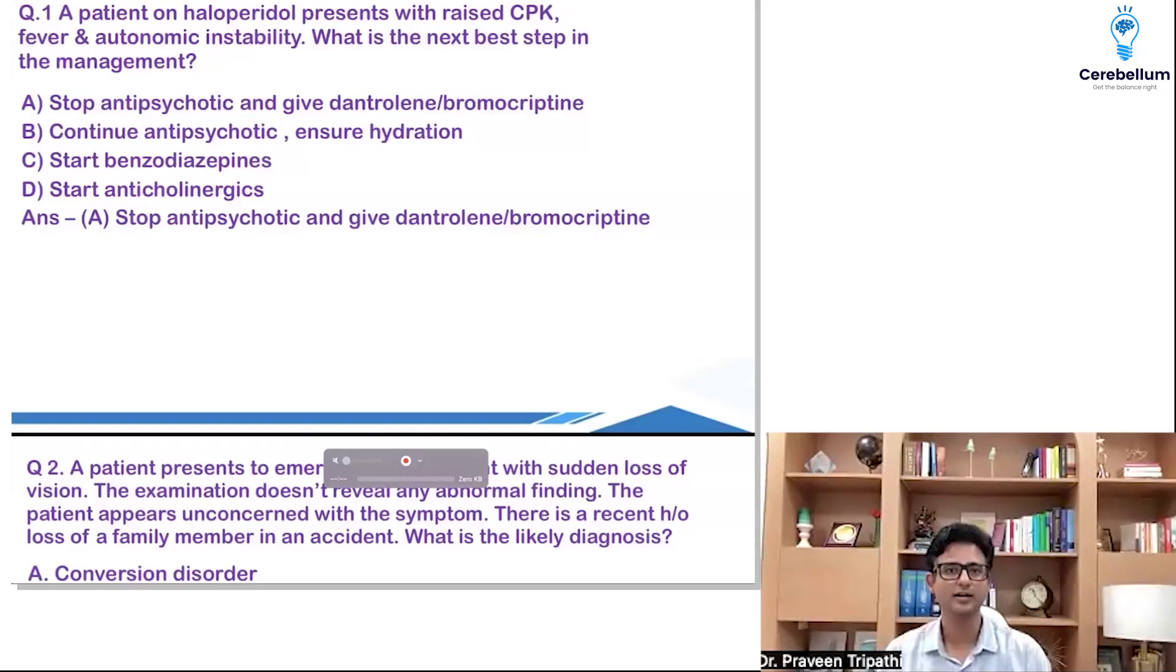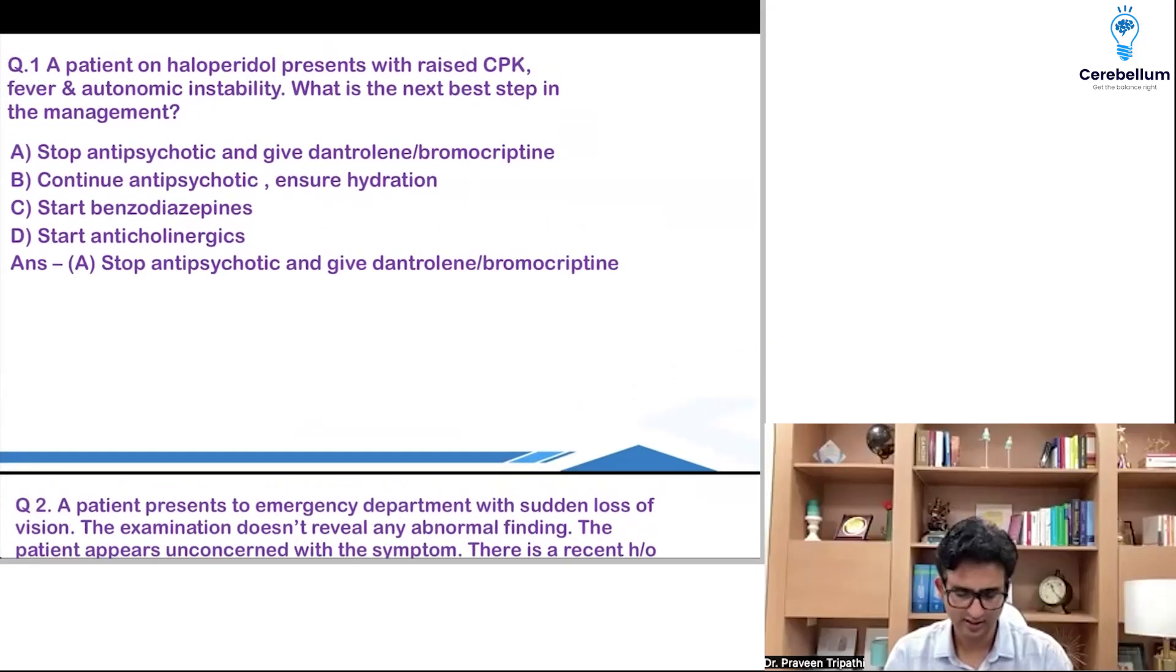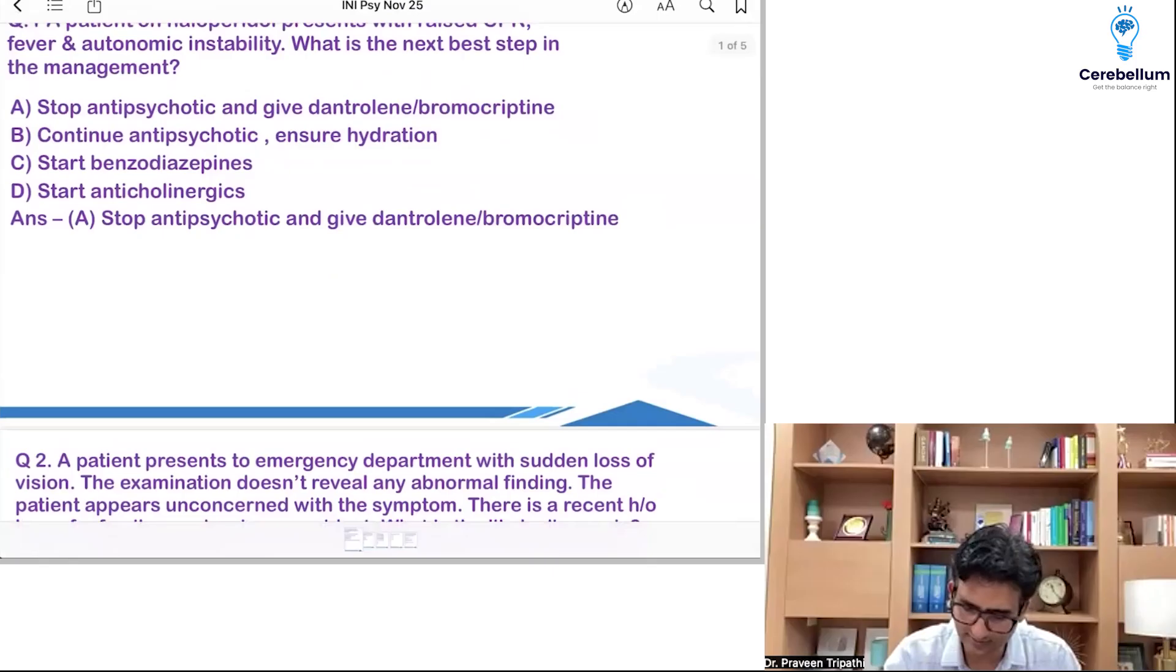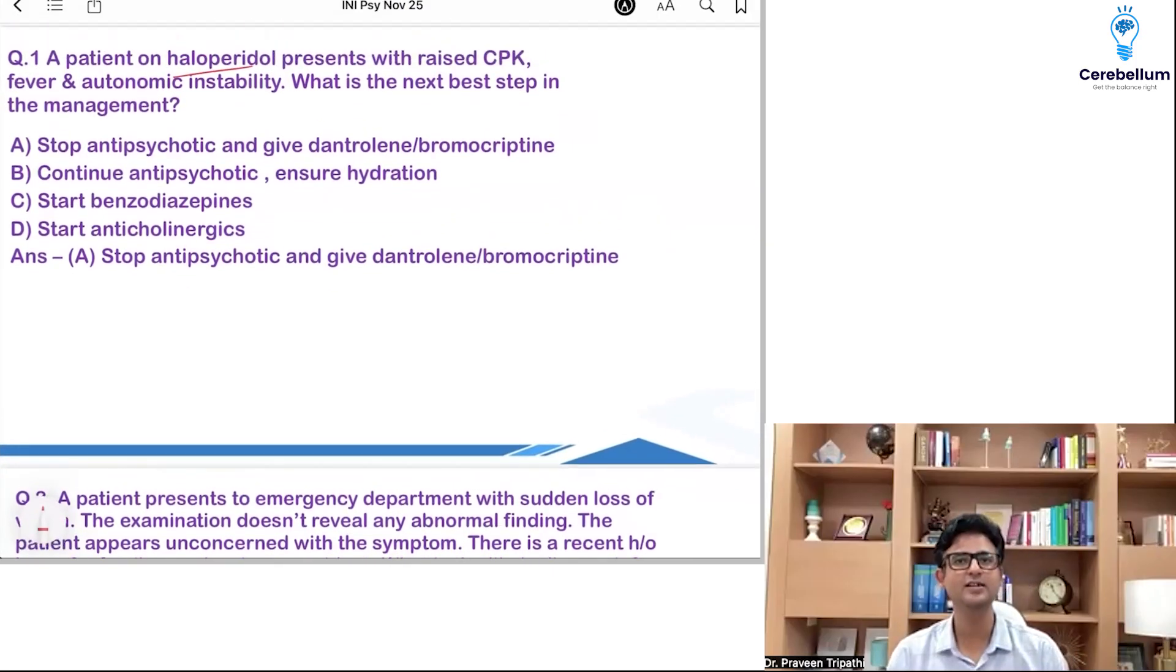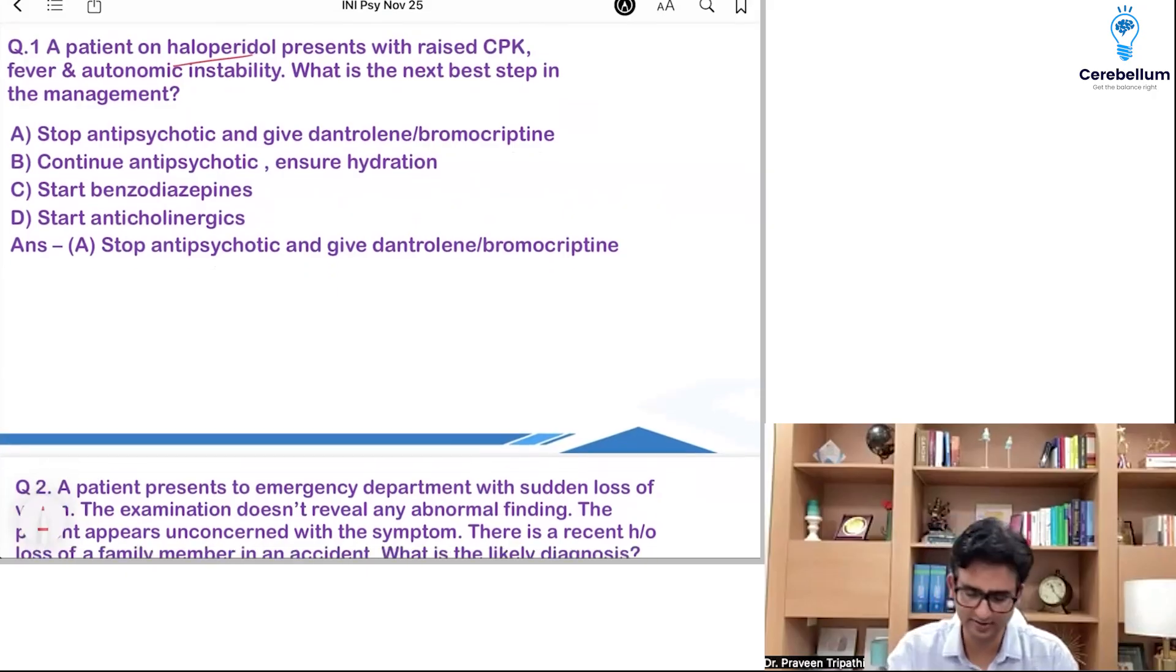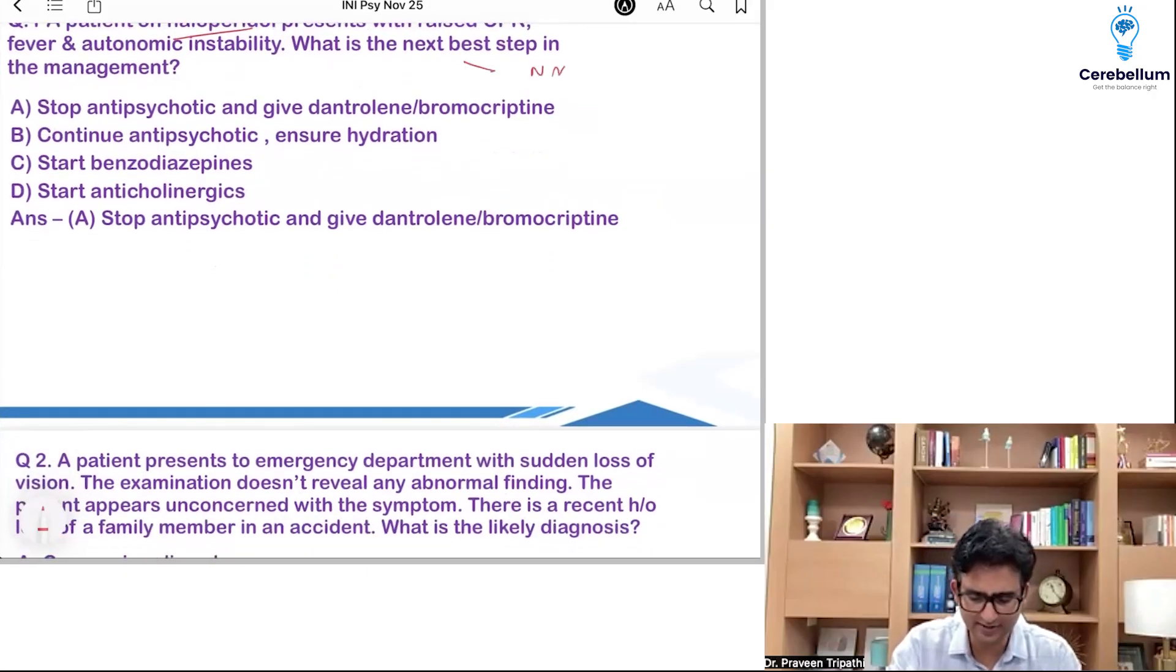This was the first question. This is a straightforward question. A patient on an antipsychotic haloperidol is presenting with raised levels of CPK, fever and autonomic instability. So, diagnosis is clearly NMS. Neuroleptic malignant syndrome.